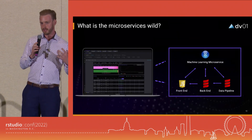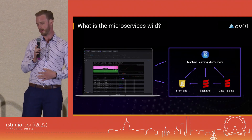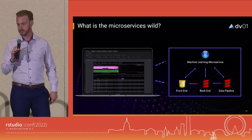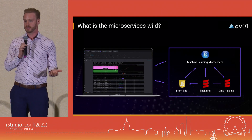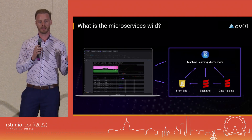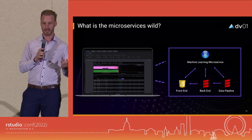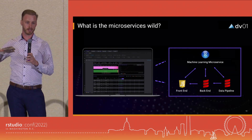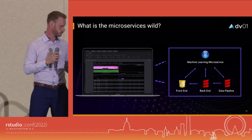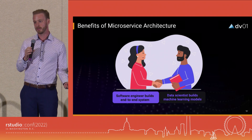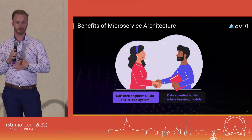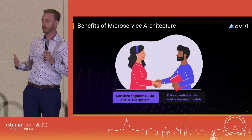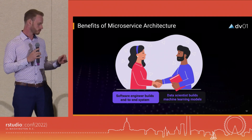At DV01, the microservice wild is our web application, which provides information that investors need to make decisions. We have a JavaScript front end, a Scala back end, and a data engineering pipeline in Scala behind that. Our R machine learning microservice sits on top of that and is able to provide results to each of the components in the pipeline. This is a great setup because I can focus on building models, and the software engineers I work with can build the end-to-end system.